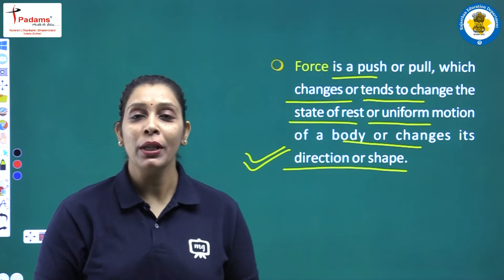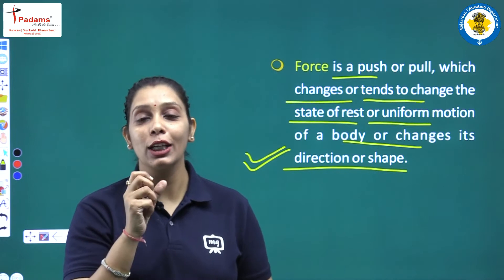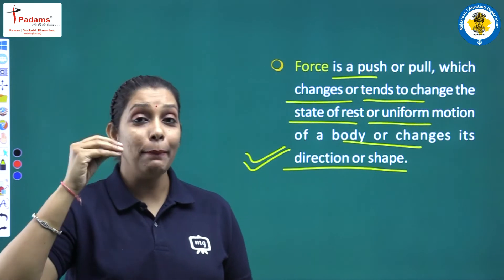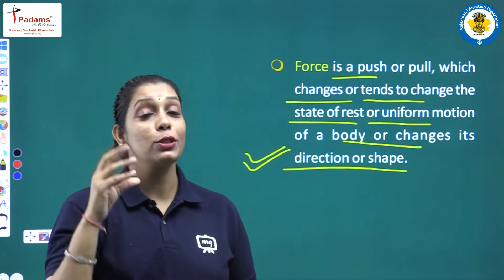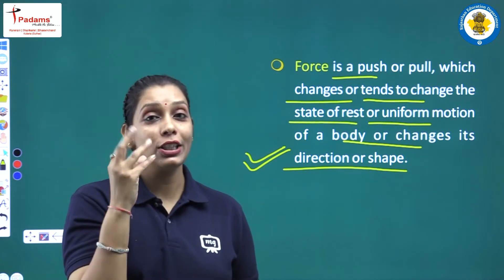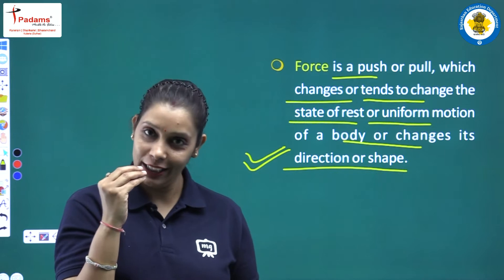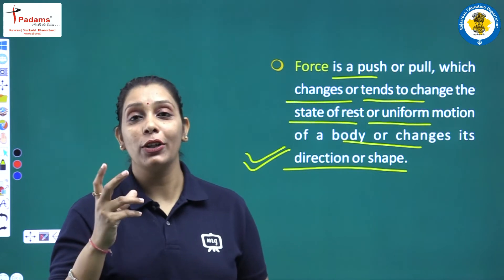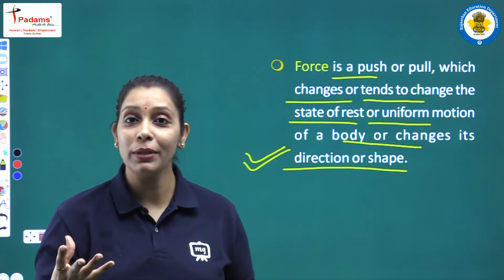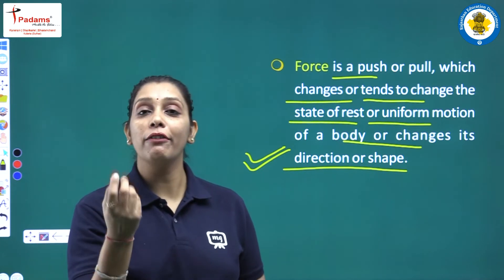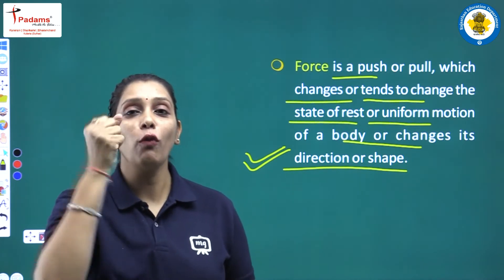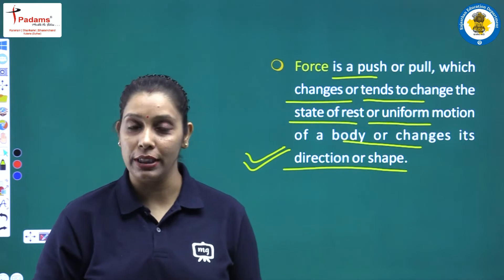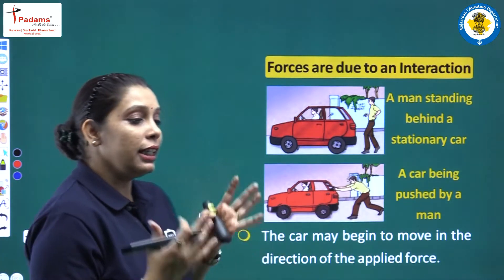Force can also change the shape of an object. For example, when you press a rasgulla, its shape changes. When you squeeze a lemon to make juice, you apply force to extract the juice. When you press a sponge, its shape changes temporarily. We will discuss this further.